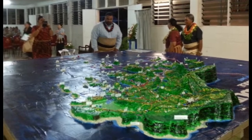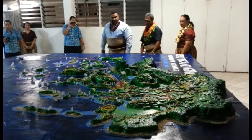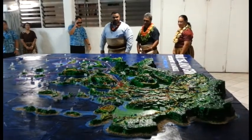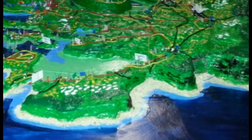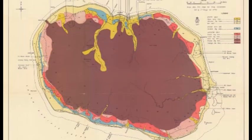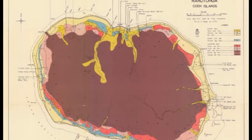Participatory three-dimensional modelling, or P3DM, is a process which assists communities to make decisions in an innovative way on land use, land tenure and resource use issues. It assists decision-making through providing a bird's-eye view of a village, district or island, thus making it easier to view broader land and marine use patterns.